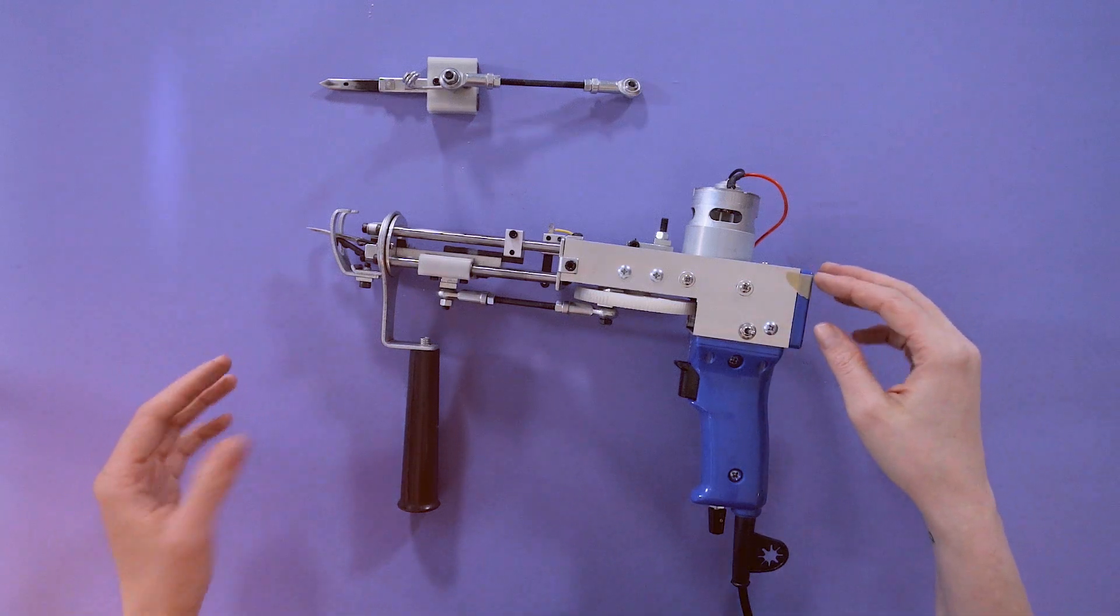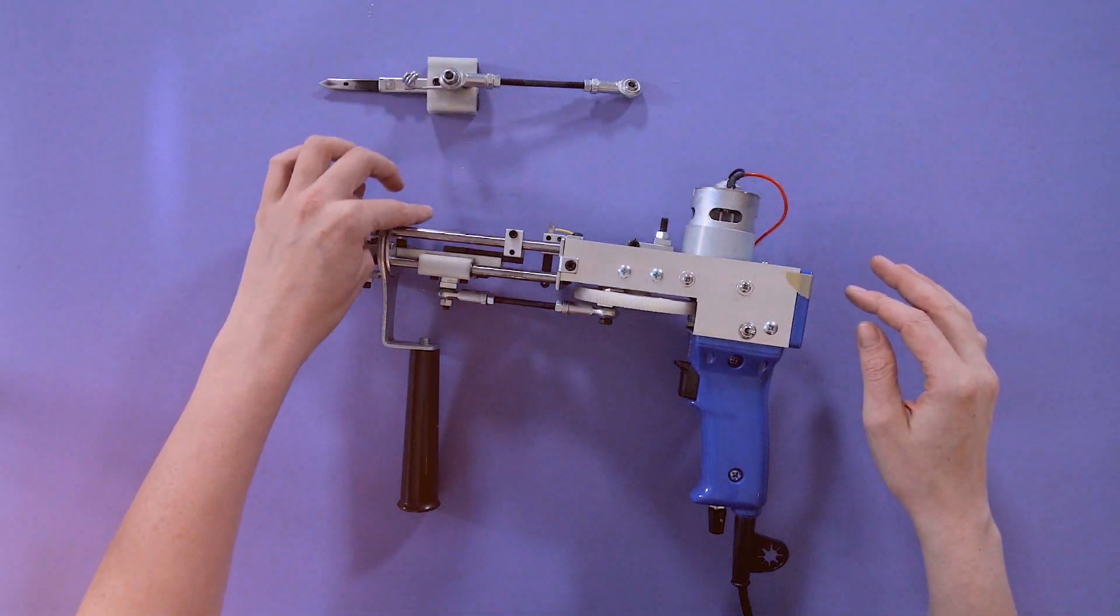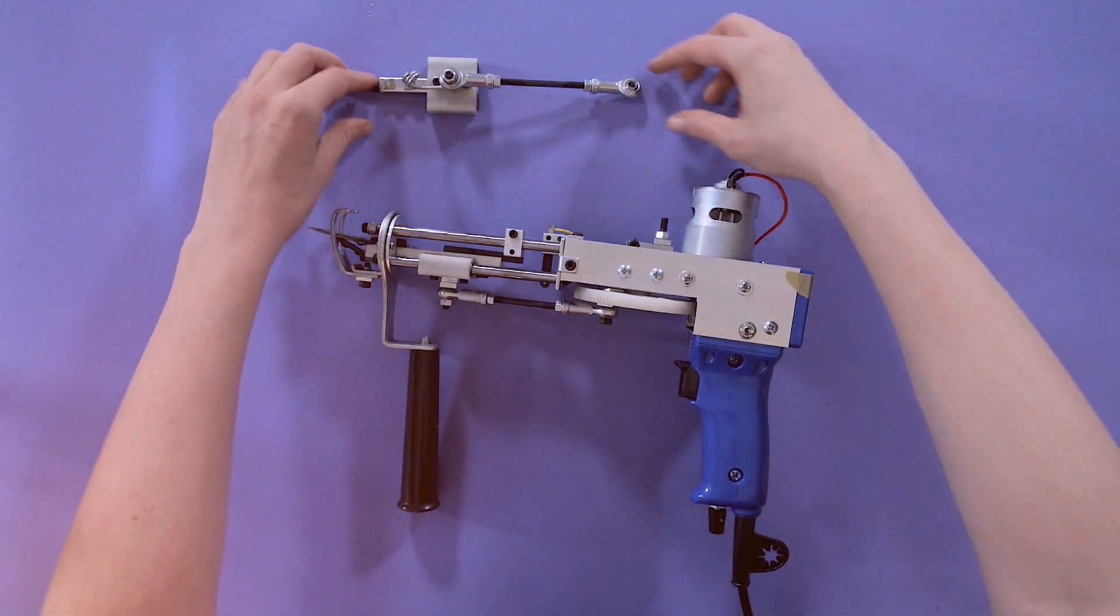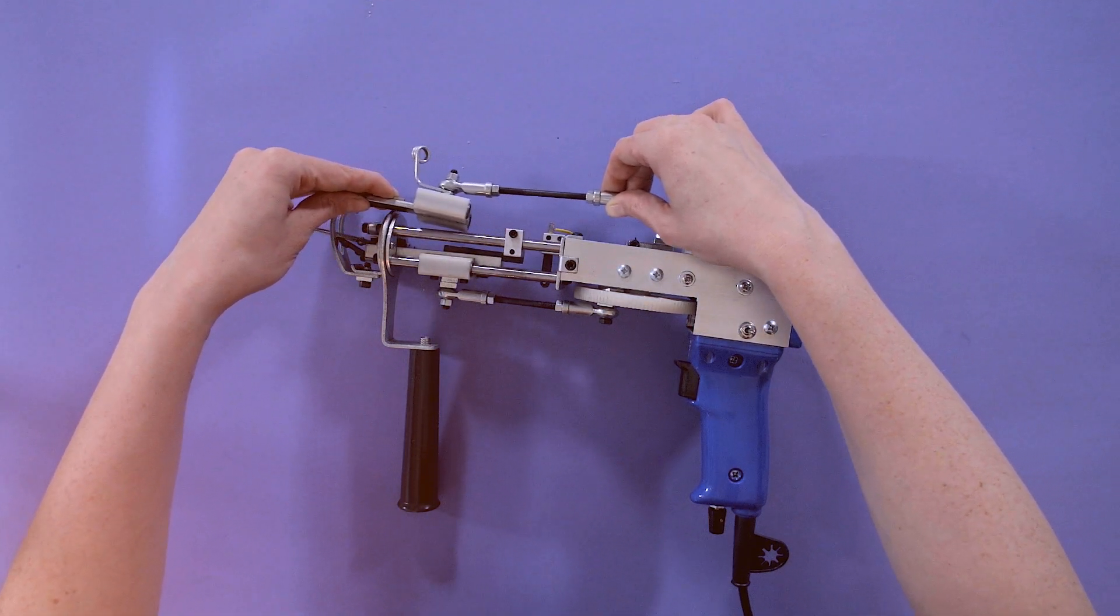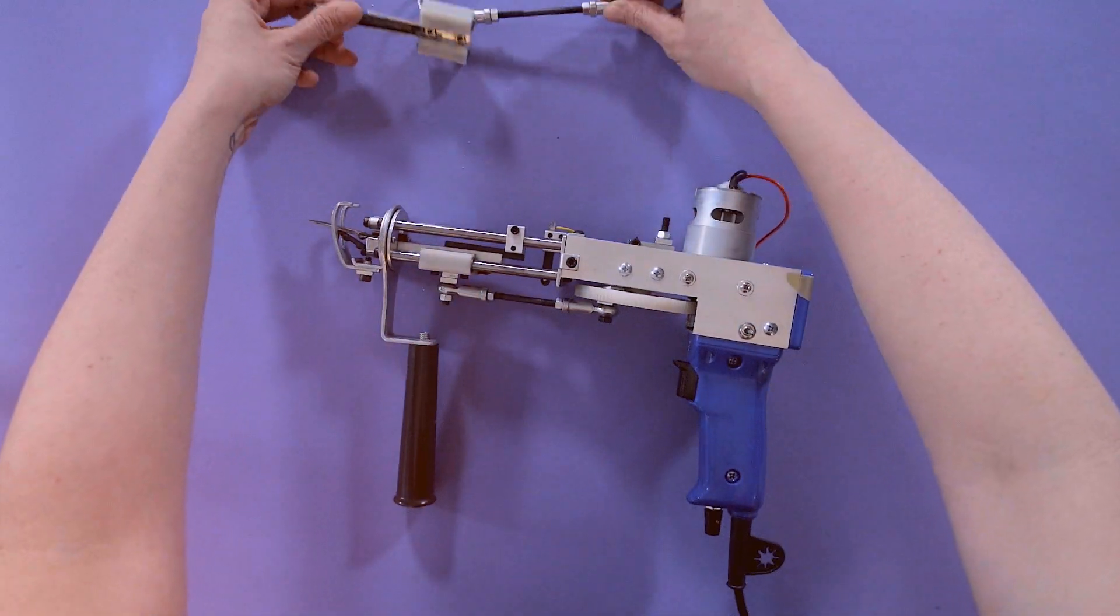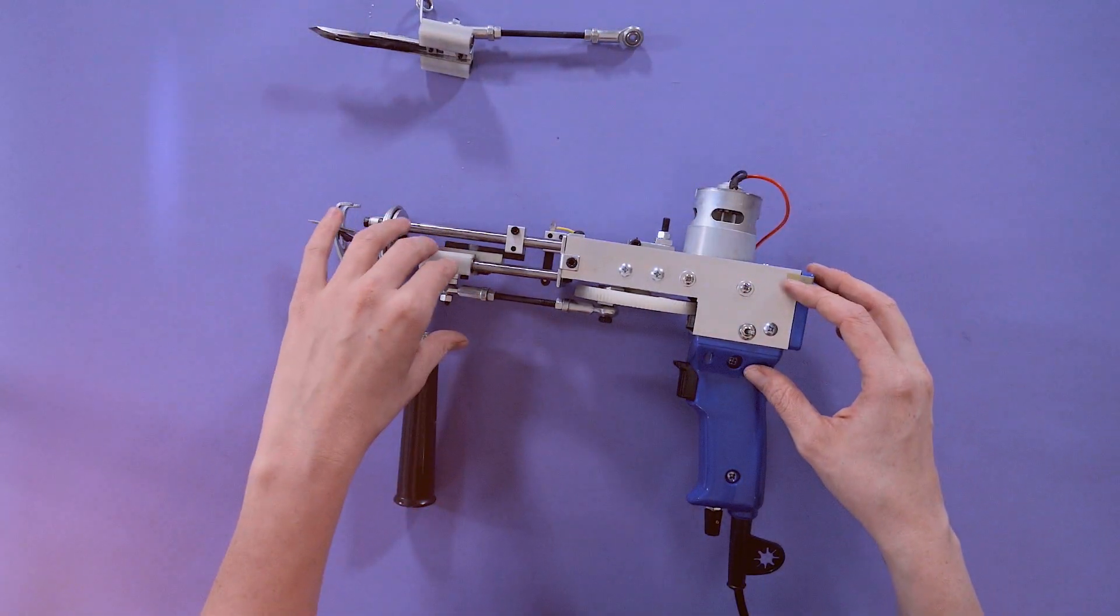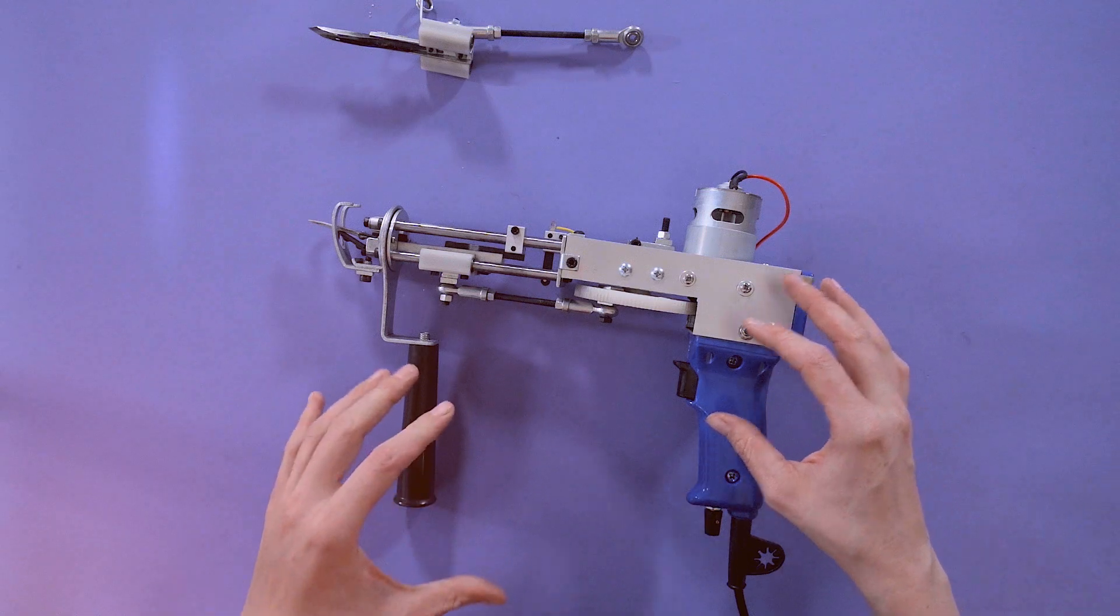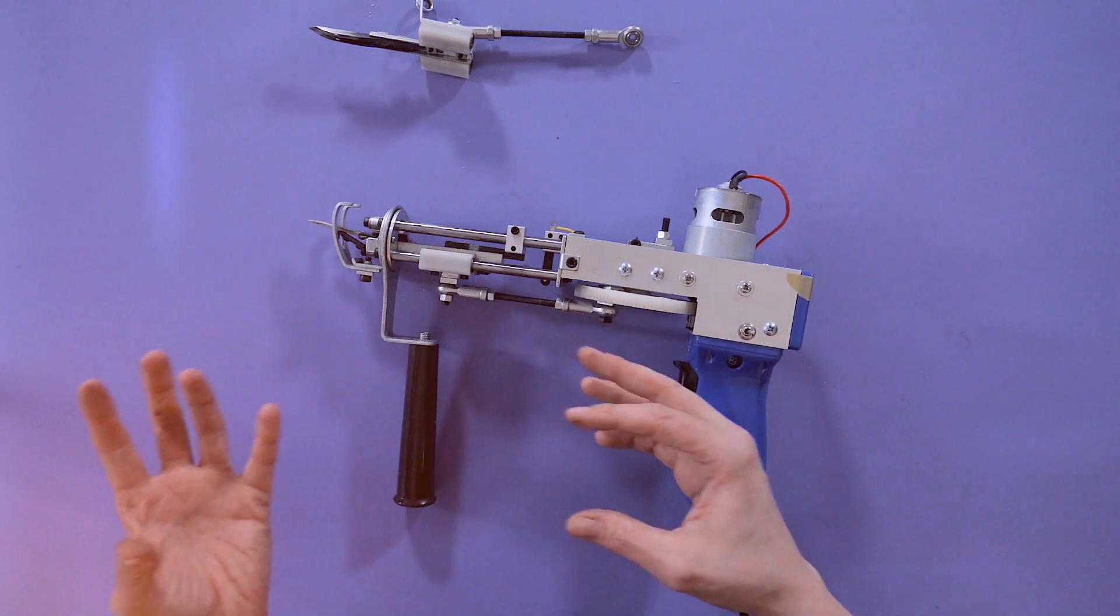So as you can see I removed this top part of the tufting machine. It's the sliding block of the top two rails with the needle on it and I did so so we can have a better look at the inside of the tufting machine and actually see what the scissors are doing.